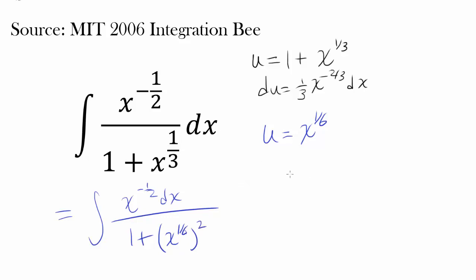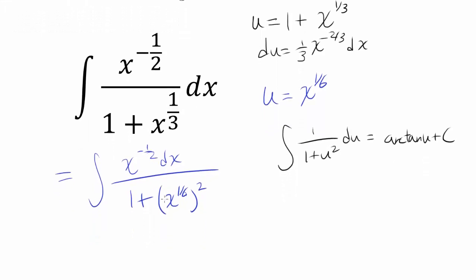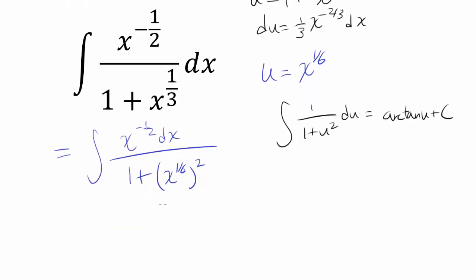And from calculus 1 class you guys may remember integral of 1 over 1 plus u squared du is arctangent of u plus c because when you differentiate arctangent of u you get 1 over 1 plus u squared. So because we are making the denominator of this fraction in the form 1 plus u squared, maybe arctangent is where we are heading towards.